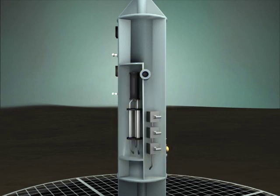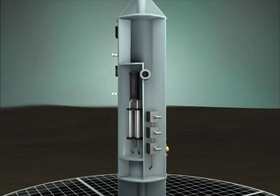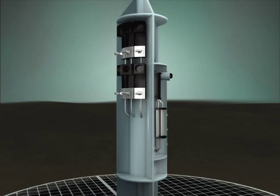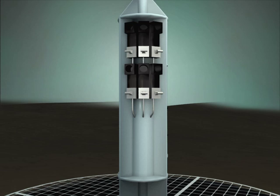A pressure bay contains highly sensitive gauges, batteries, and a computer that makes measurements and stores data for up to six years. A long-term fluid sampling bay contains samplers that collect fluids from depth using an osmotic pump, storing the samples in thin tubes for years until they can be recovered and analyzed on shore.